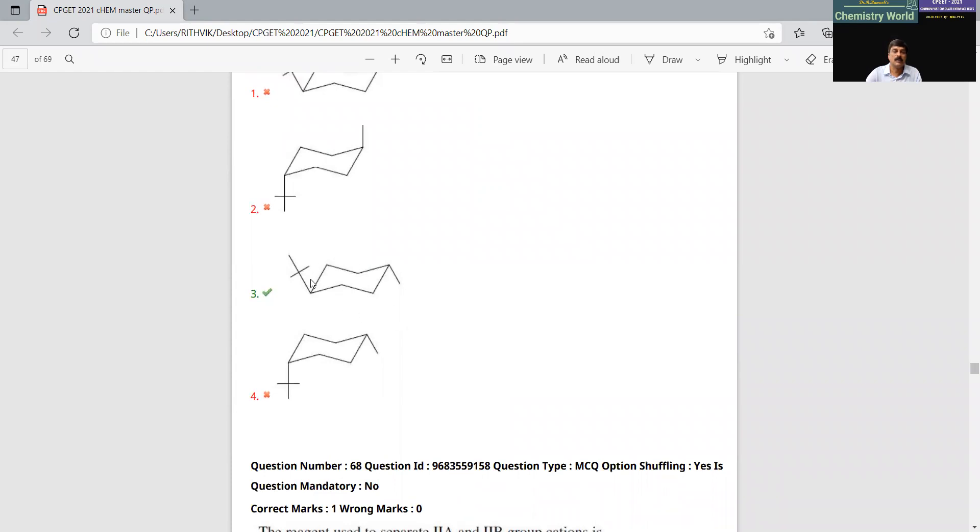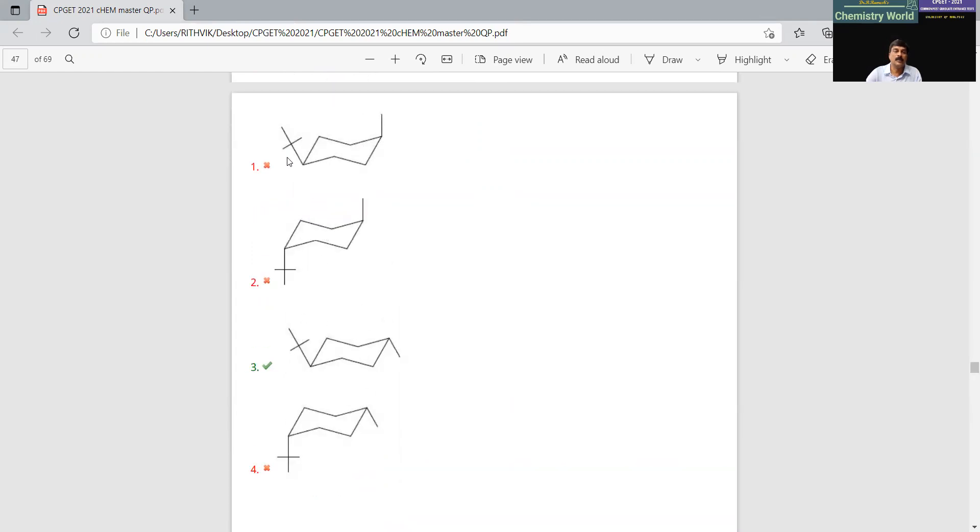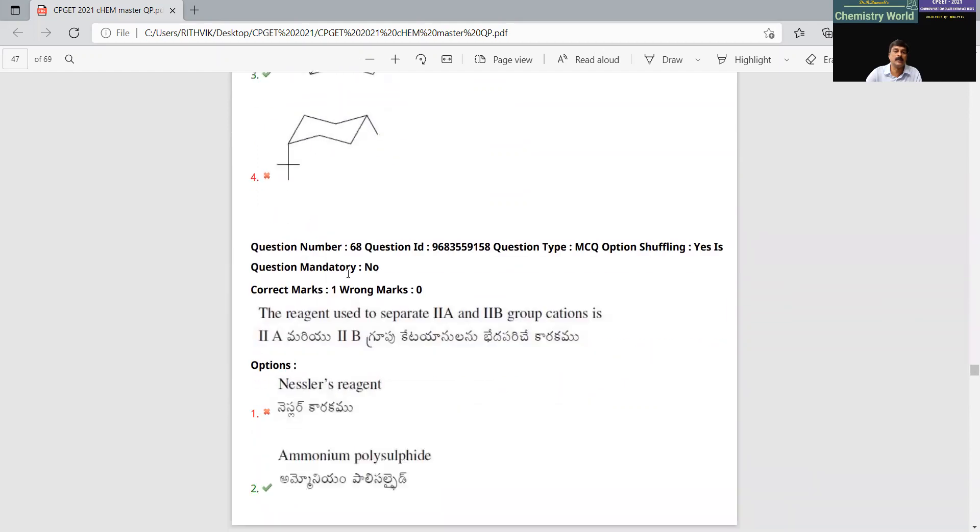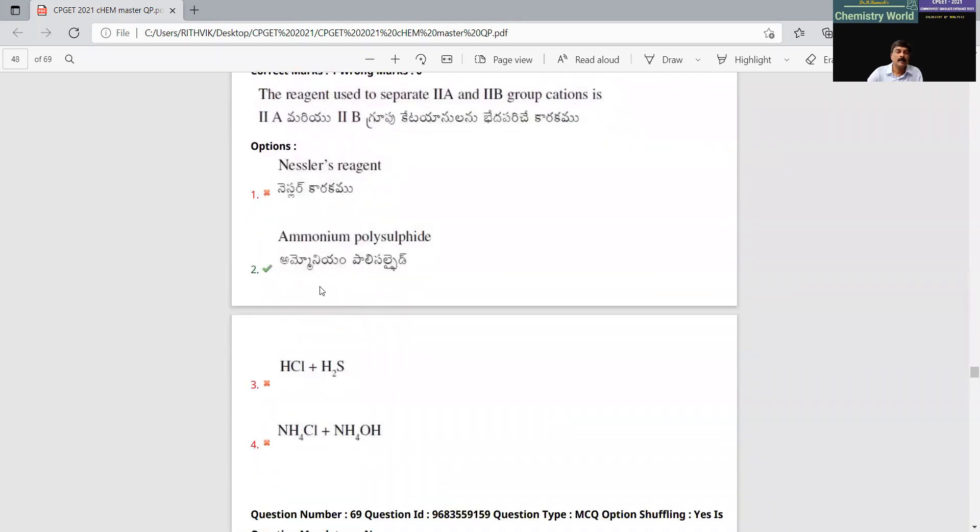More equatorial groups. Particularly, the bulky group must be present in equatorial position. But here, the other methyl group is in axial position. We have one-three-diaxial interactions. This is less stable when compared to this. There are no interactions. The equatorial position has the least interactions. This is the most stable conformation.